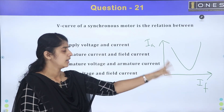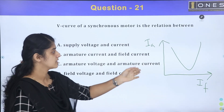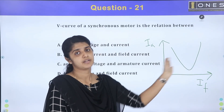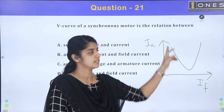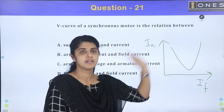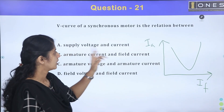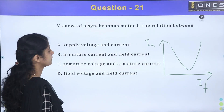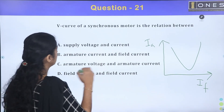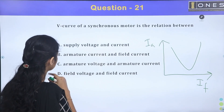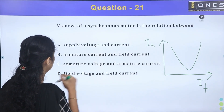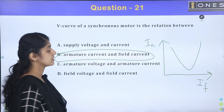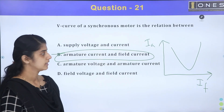The V-curve also shows power factor variation — lagging power factor and leading power factor. For power factor versus field current, the shape is an inverted beaker. The answer is option B: armature current versus field current.